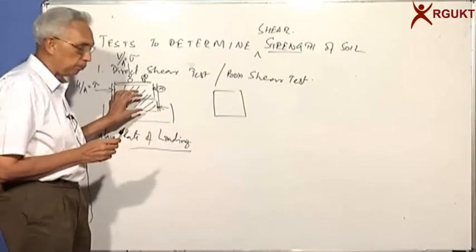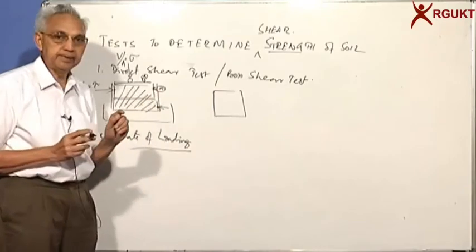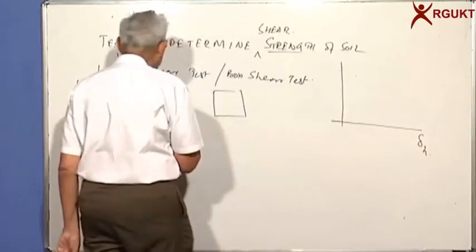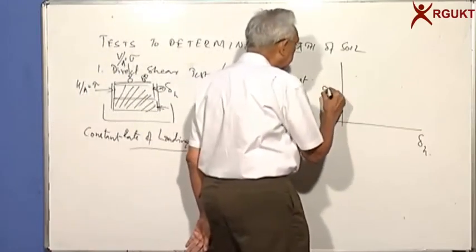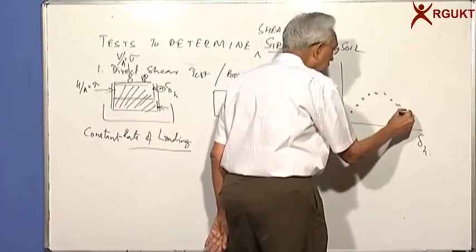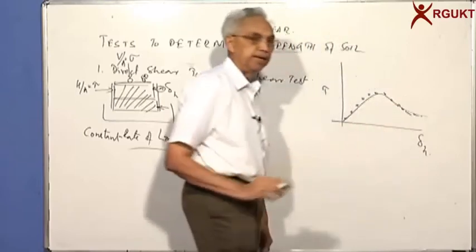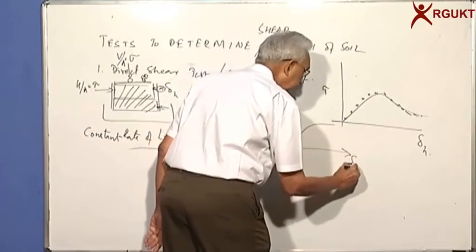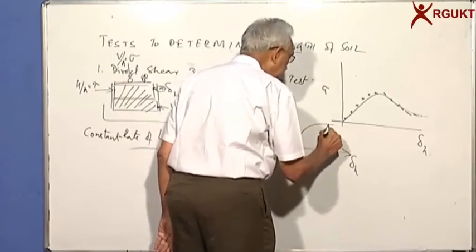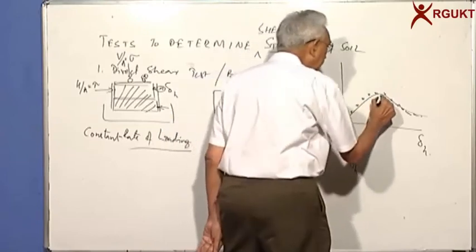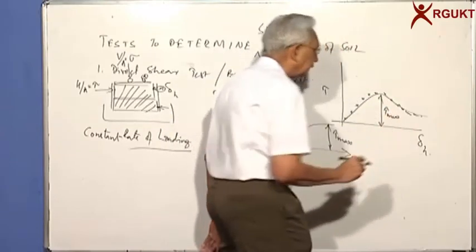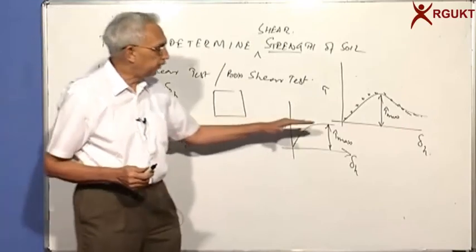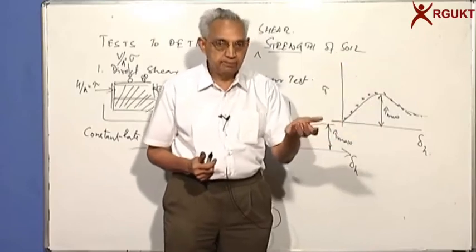After the soil is compressed under the normal stress, we apply the horizontal force and take dial readings as movement takes place, so I can get a graph of horizontal displacement versus shear stress. You get a curve that rises to a maximum. The maximum shear stress is tau max. Sometimes the shear stress will drop down after the peak — different soils have different characteristics. The test is run at a constant rate of loading using a motor.